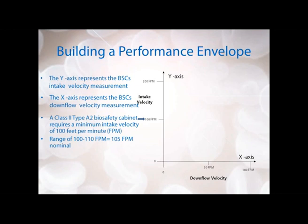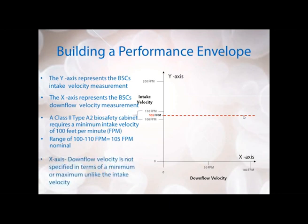That way, if there's any fluctuation in the instrumentation measurement of your inflow intake, it will not ever be below 100 feet per minute. So we have our acceptable range of 100 to 110 feet per minute, with 105 feet per minute being the nominal set point. The downflow velocity is not specified in terms of a minimum or maximum like the intake air — this is dependent on whatever the company decides works best for their cabinet. They should let you know what the downflow velocity set point is. For example, we have it set here at 50 feet per minute.